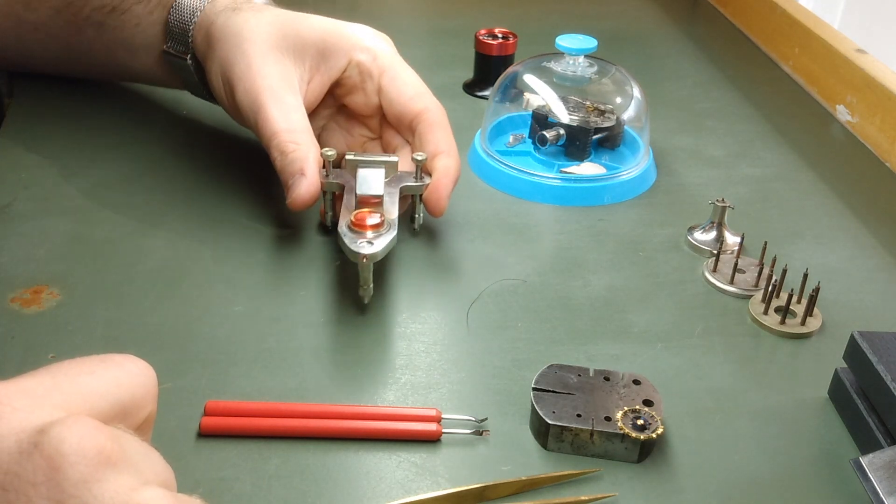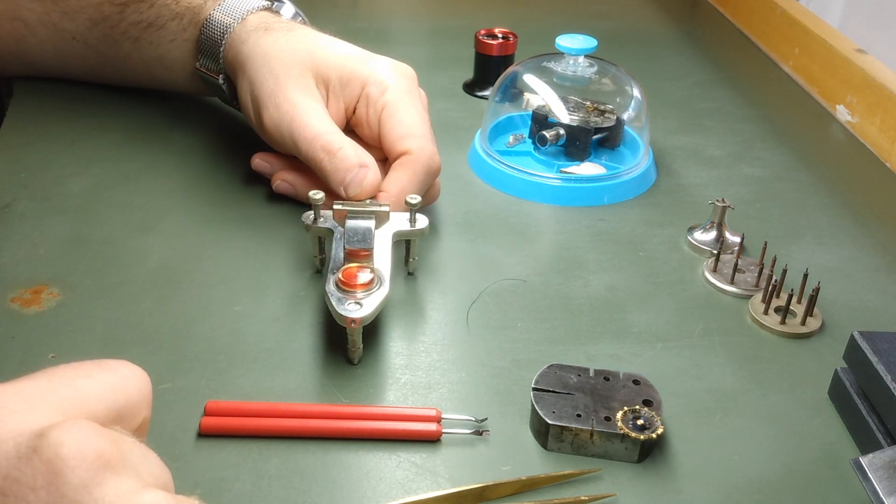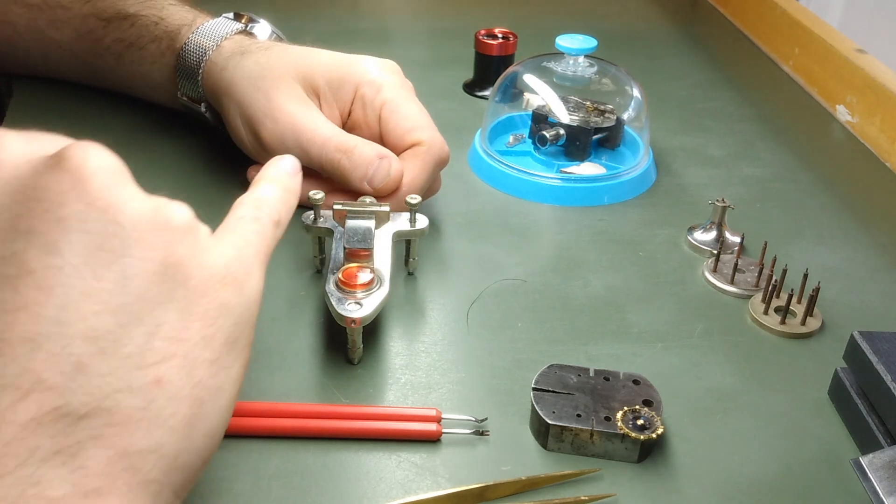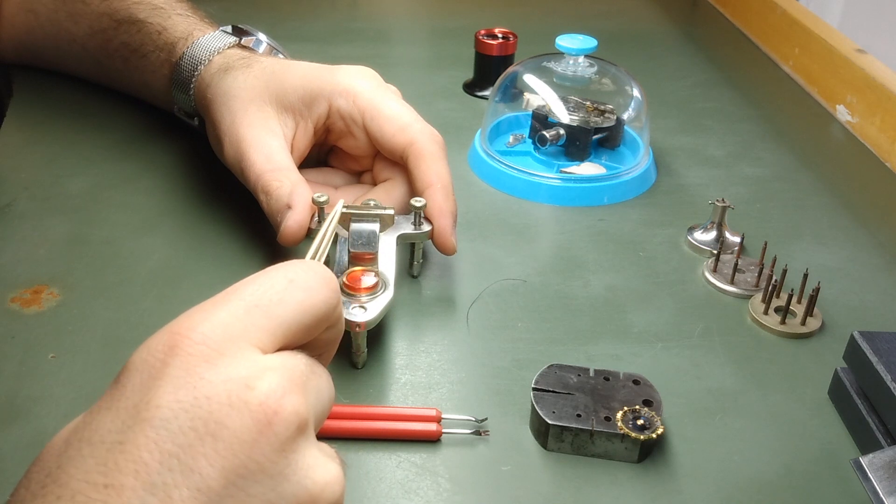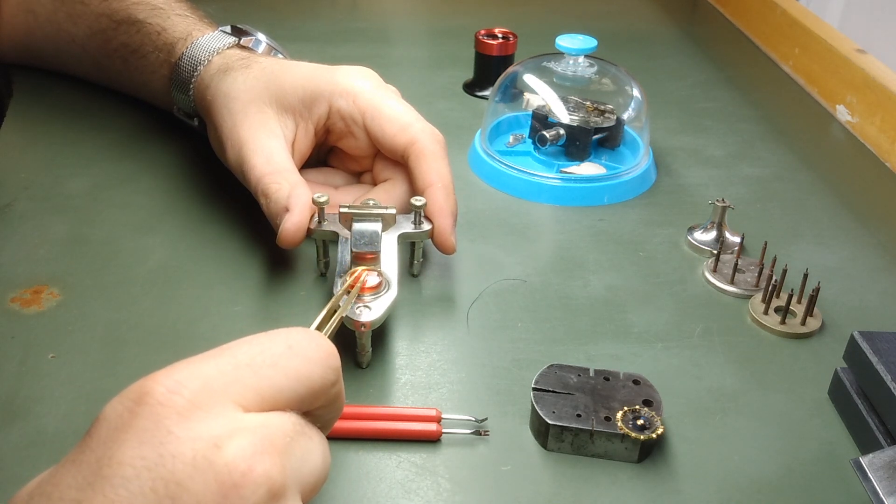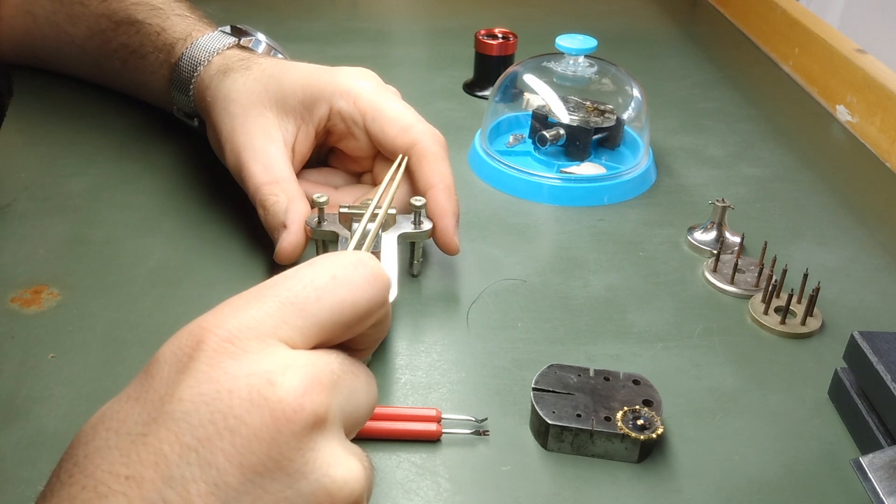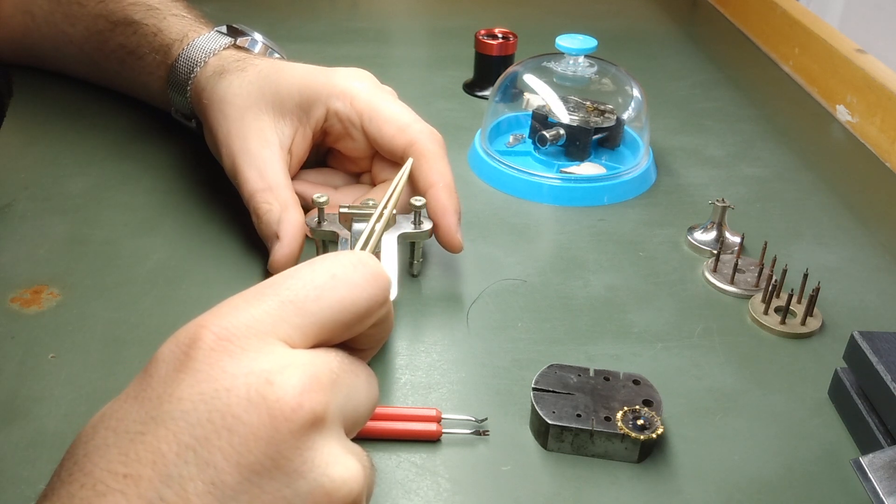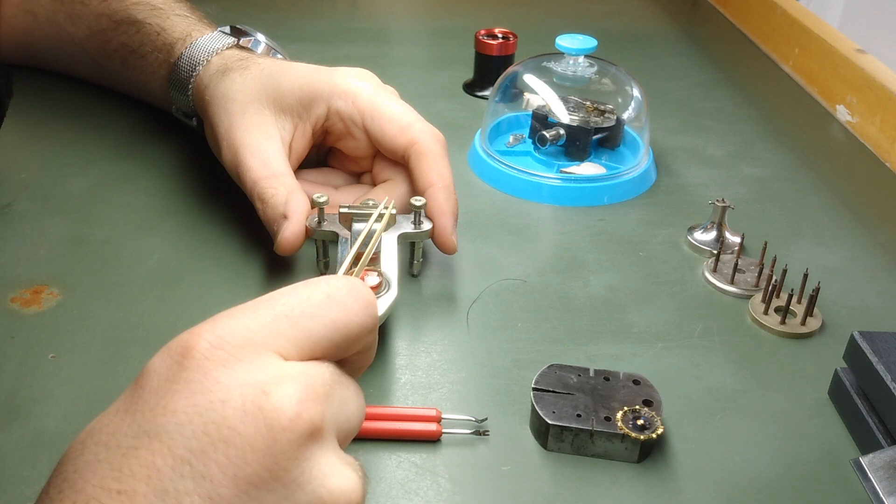I've got a poising tool, a watchmaker's poising tool. So this is a really quite an interesting tool. What this does is it allows you to set the balance on its pivots, on these little ruby jaws. And we're going to make the tool exactly level using the spirit level. And then when we place the wheel on, we're going to see where the heavy spot is in the wheel. That's going to roll to the bottom. Then we can choose that screw, remove weight from the underside of that screw, and poise it again until we've got a perfectly poised balance wheel.